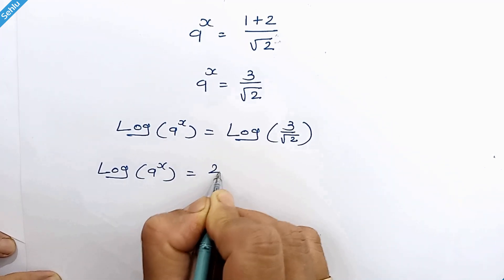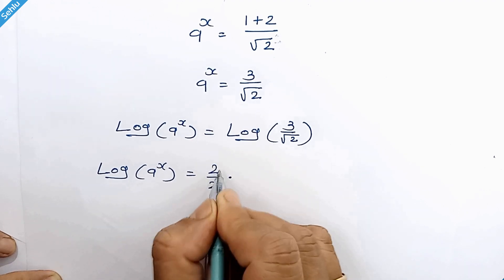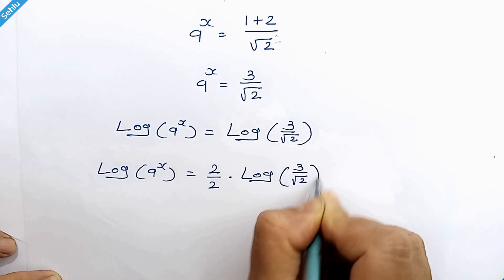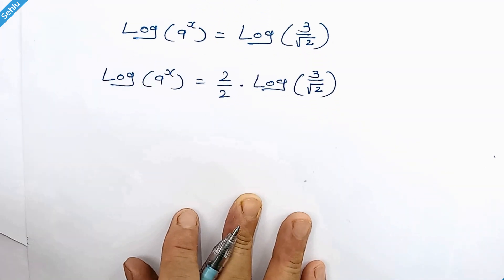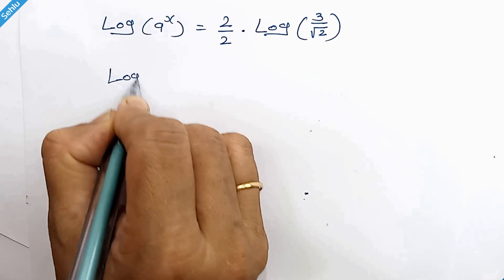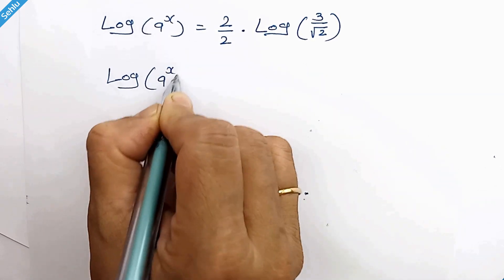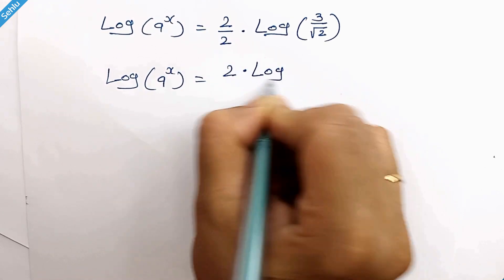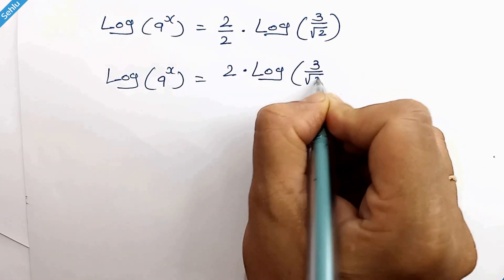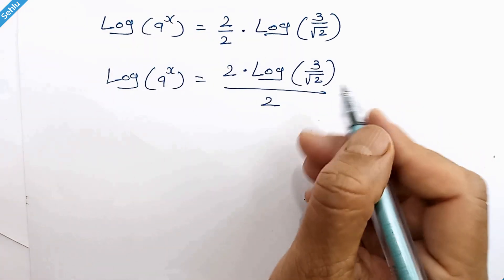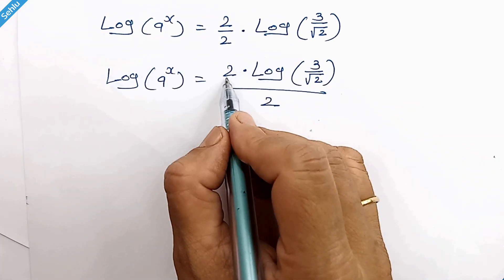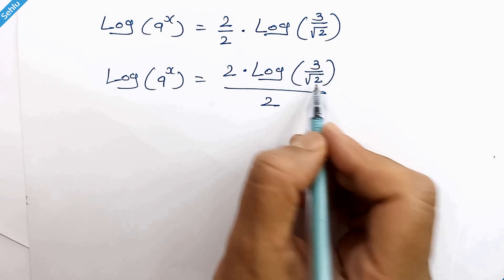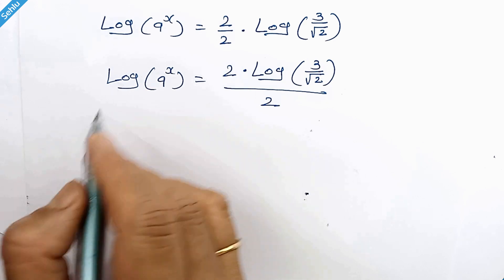Our next step will be to multiply both sides by 2. So we can write it as log of 9 to the power x is equal to 2 times log of 3 over square root of 2, over 2. Now this 2 can be written as an exponent of 3 over square root of 2, and this x will be here as a factor.